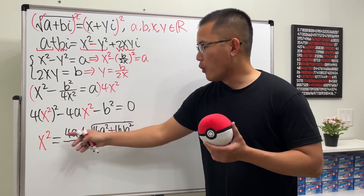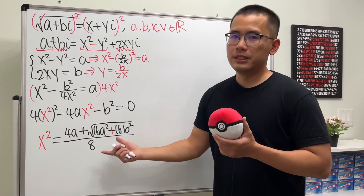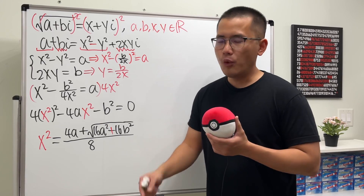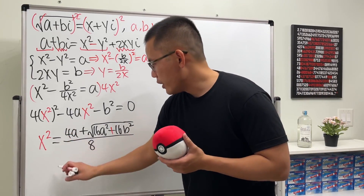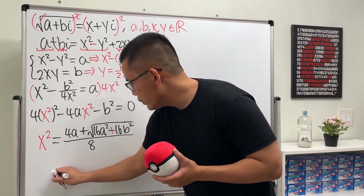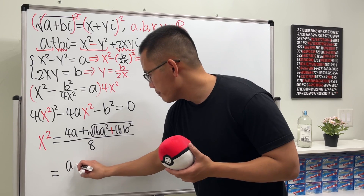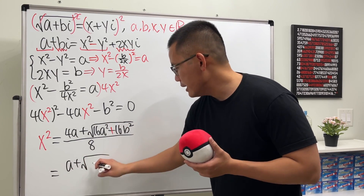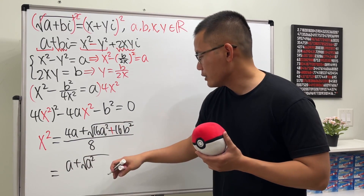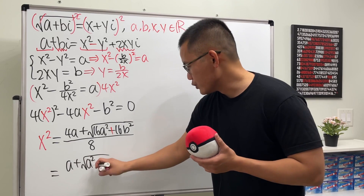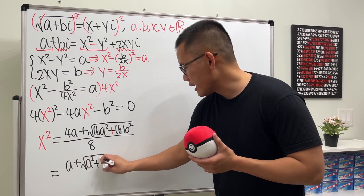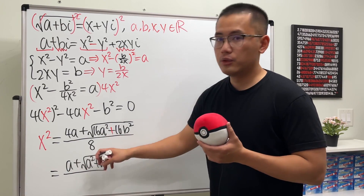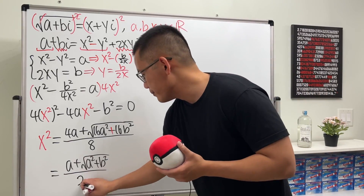After cancelling common factors of 4, we get x² = (a + √(a² + b²)) / 2. That is our simplified expression for x².